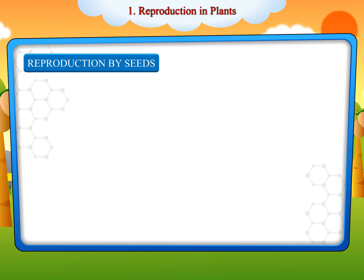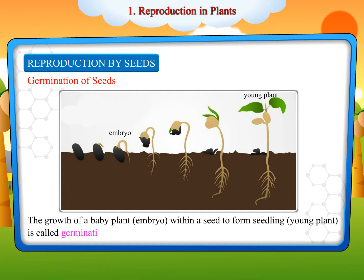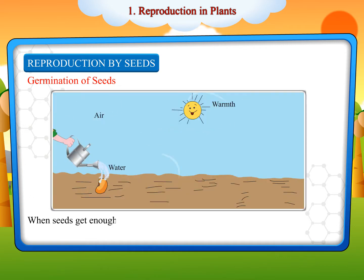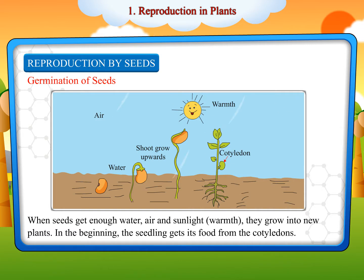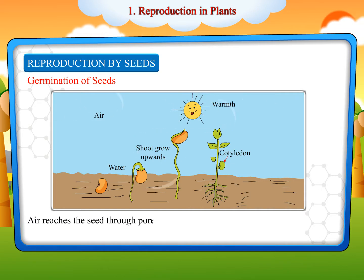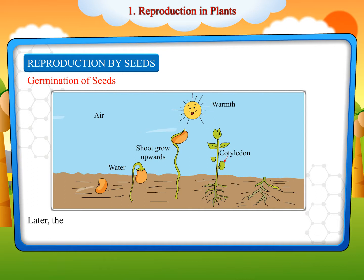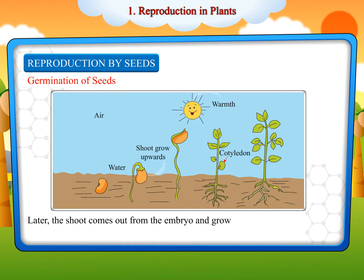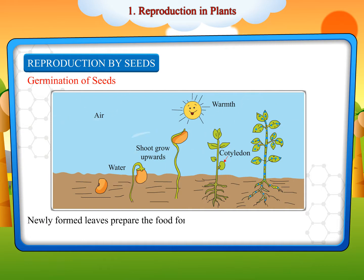Reproduction by Seeds. Germination of Seeds: The growth of a baby plant, or embryo, within a seed to form a seedling or young plant is called germination. When seeds get enough water, air, sunlight and warmth, they grow into new plants. In the beginning, the seedling gets its food from the cotyledons. Air reaches the seed through pores in the soil. The roots come out first and grow downwards into the soil. Later, the shoot comes out from the embryo and grows upwards towards sunlight. The seedling gets water and nutrients from the soil. Newly formed leaves prepare the food for the plant.